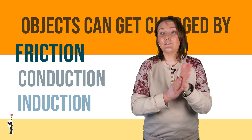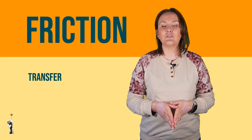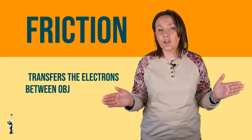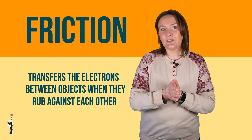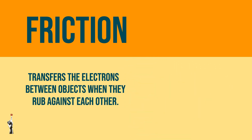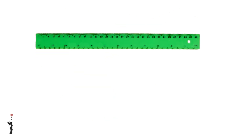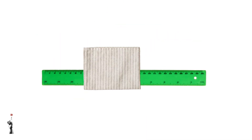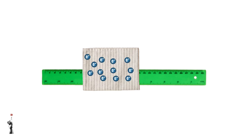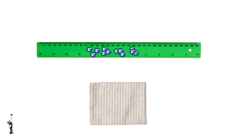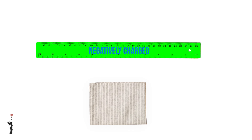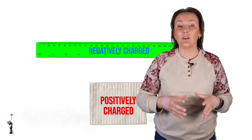There are three main ways that objects can get charged. The one we see the most is friction — friction transfers electrons between objects when they rub against each other. When two different materials like a plastic ruler and a piece of cloth rub against each other, the electrons — the tiny particles with a negative charge — can move from one object to the other.